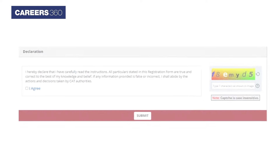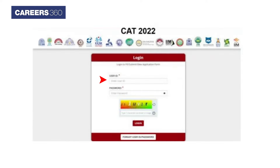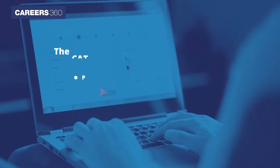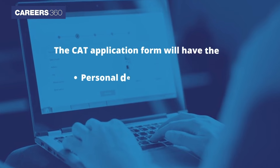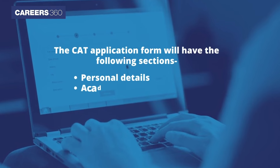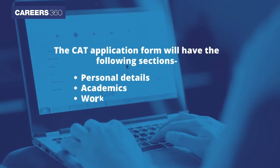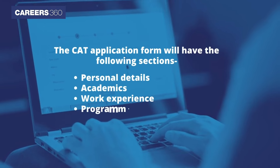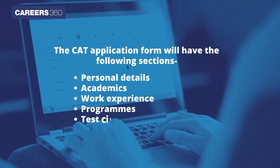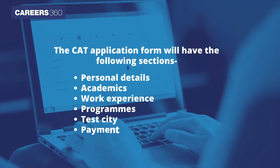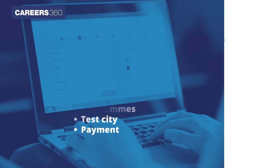Login to the Dashboard using the User ID and Password received on the Mail ID. The CAT application form will have the following sections: Personal Details, Academics, Work Experience, Programs, Test City, and Payment. Candidates must fill all six sections to complete the CAT application process.